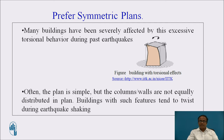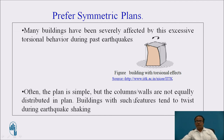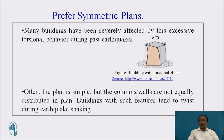Prefer symmetric plans. Many buildings have been severely affected by excessive torsional behavior during past earthquakes. Often the plan is simple but the columns and walls are not equally distributed, so buildings with such features tend to twist during earthquake shaking. Even if the plan is symmetric, the position of columns and walls should be distributed in a proper manner to avoid twist during earthquake shaking.